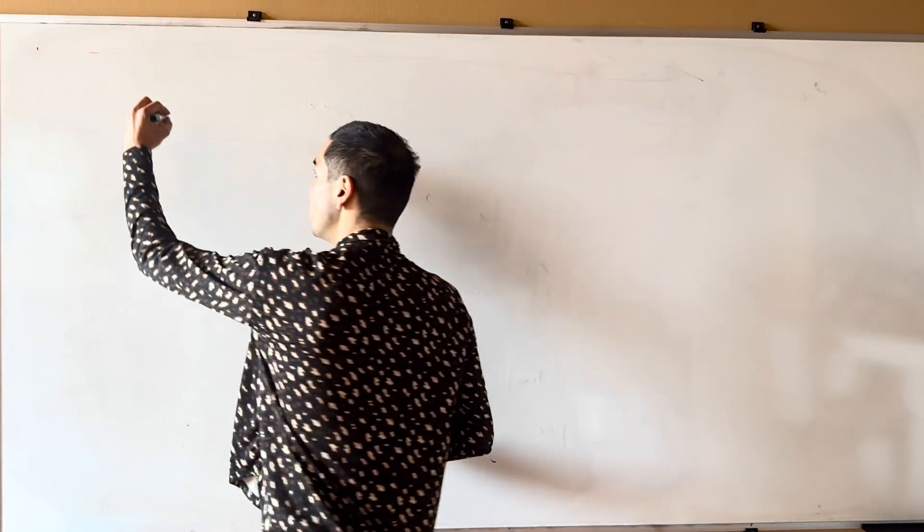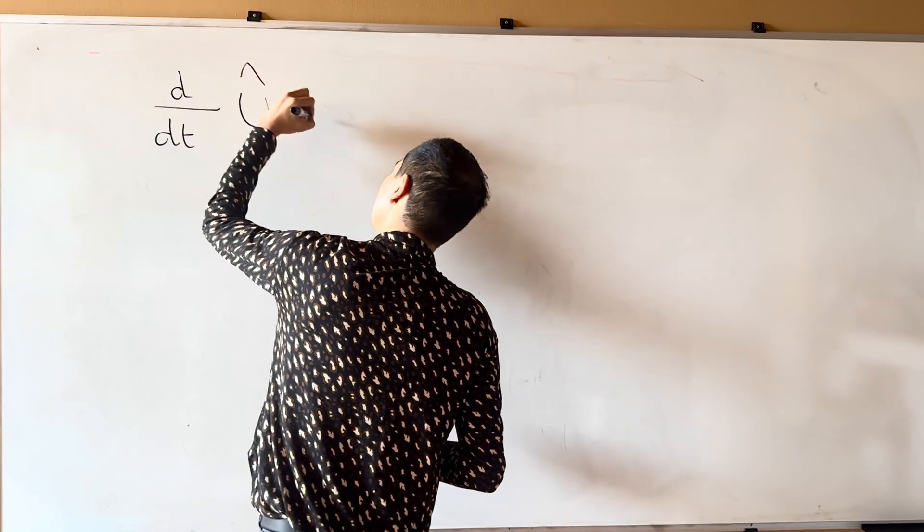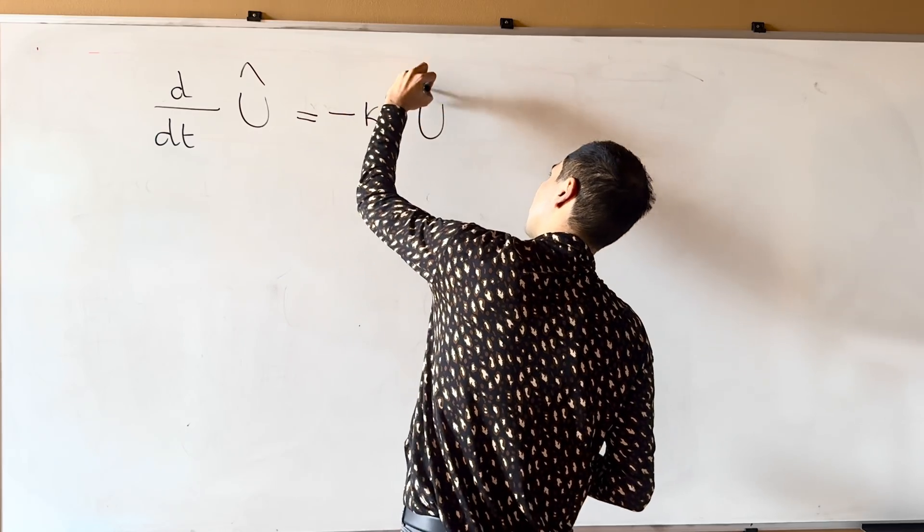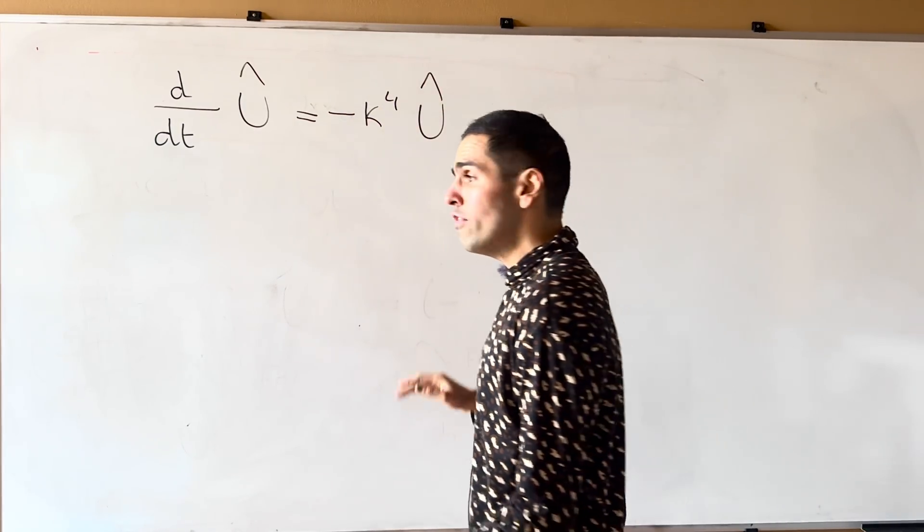So just to remind you, what we got so far: D over DT U hat is minus kappa to the fourth U hat. And the next thing is, solve this ODE.